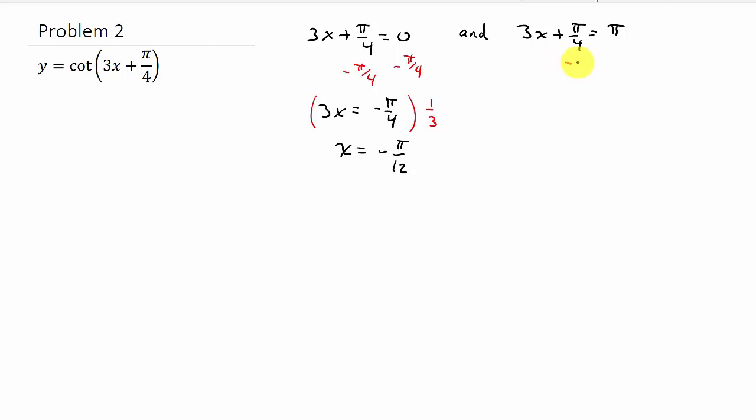And then here, we'll subtract π over 4 to both sides. So that gives me 3x is equal to, what is that, 3π over 4.